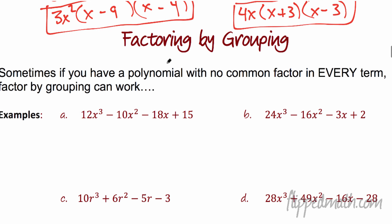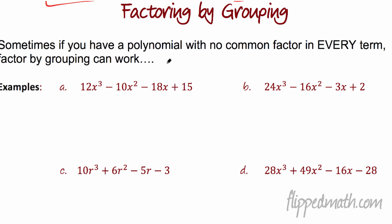New stuff — factor by grouping. The way this works, we look at each polynomial in pairs. So the first pair here is the 12x³ and the 10x². What we're going to hope to do is factor out something, and what you're left with will be the same on both, and then we can factor that out. Let me show you an example.